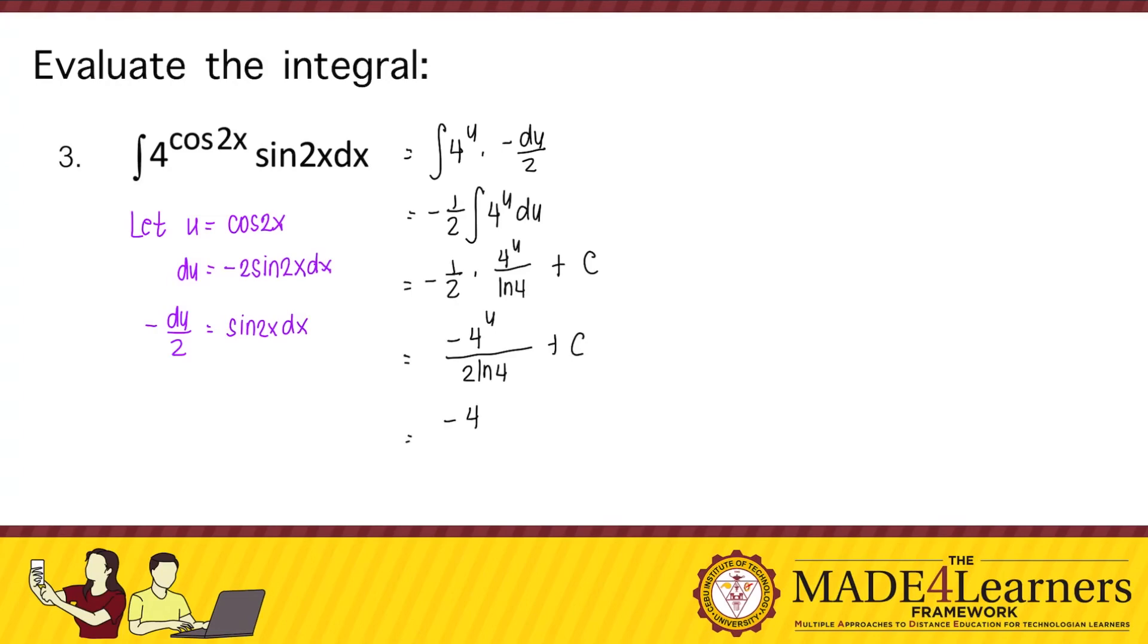We can write our answer as negative 4 to the power of cosine of 2x. That's ln. This can be written as ln of 4 to the power of 2. So ln of 4 to the power of 2 is 16 plus c.